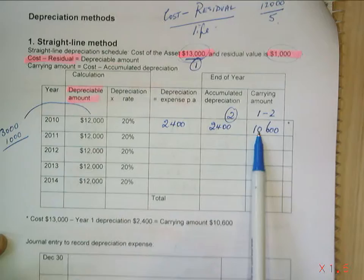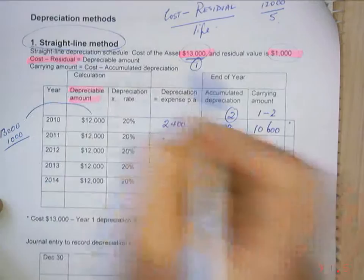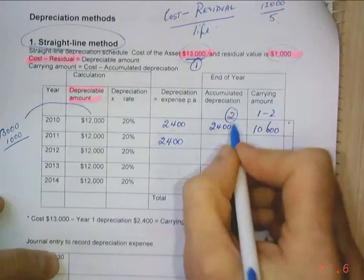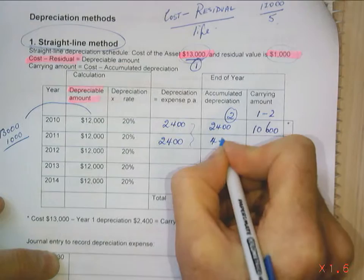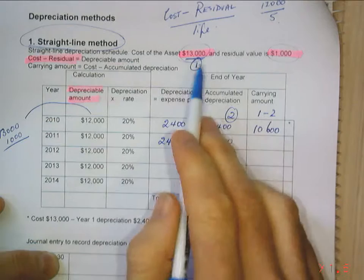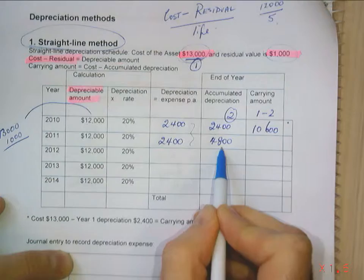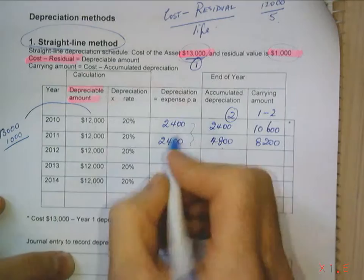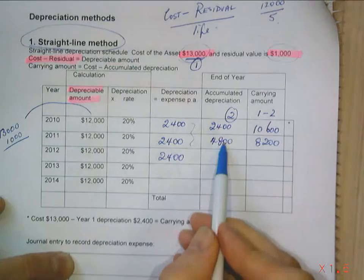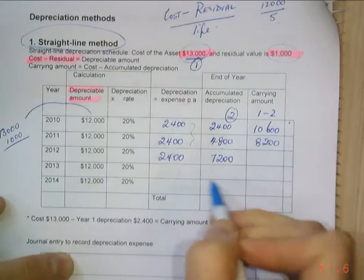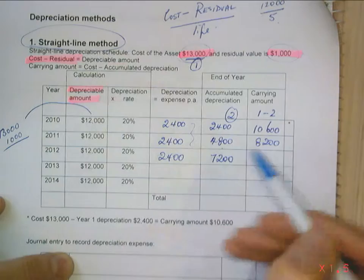Next year we're doing exactly the same. Because we're doing straight-line method, my depreciation is the same every year — $2,400. My accumulated depreciation is the sum of my depreciations, which is $4,800. And my carrying amount is my cost minus my accumulated depreciation, which gives me $8,200. Once again, depreciation is $2,400. Adding my depreciations together gives me $7,200. And my carrying amount is my cost minus my accumulated depreciation, giving me $5,800.